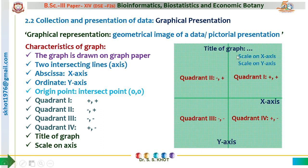A typical graph must be represented with its title, and the scales used on the X axis and Y axis should be indicated. In biostatistical data, most data falls in quadrant 1. So when drawing the X and Y axes, we keep maximum space for quadrant 1 and neglect the space for quadrants 2, 3, and 4.